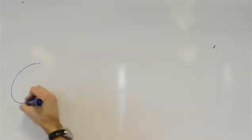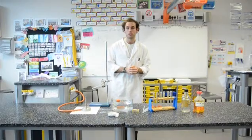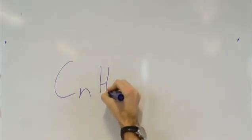Alkanes have a chemical structure CnH2n+2, where n is the number of carbon atoms in the molecule. Alkenes have the chemical structure CnH2n.